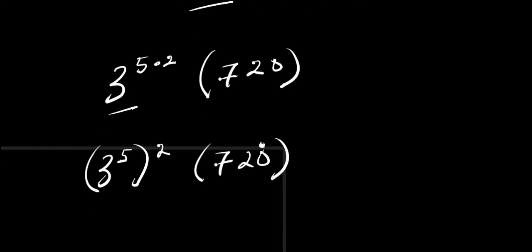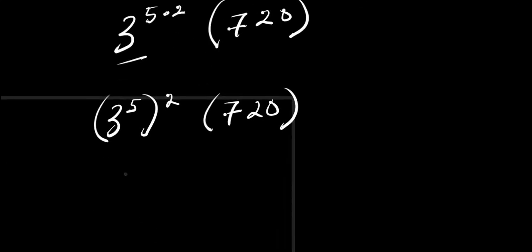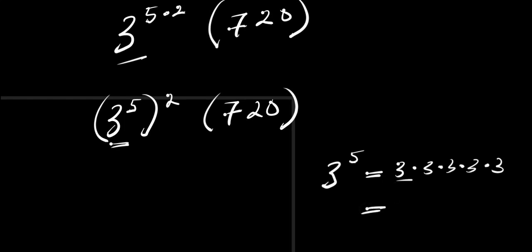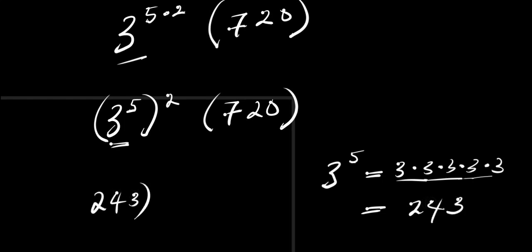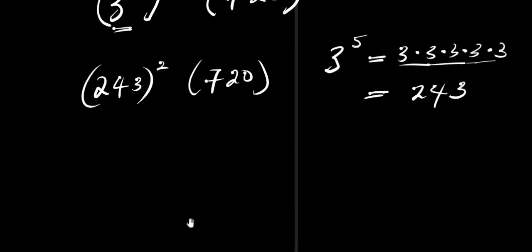So from here, what is the value of 3 to the power of 5? 3 to the power of 5 equals 3 times 3 times 3 times 3 times 3. That is 9, then 27, then 81, then 243. So we have 243 squared times 720. What is 243 squared? That simply means 243 times 243.